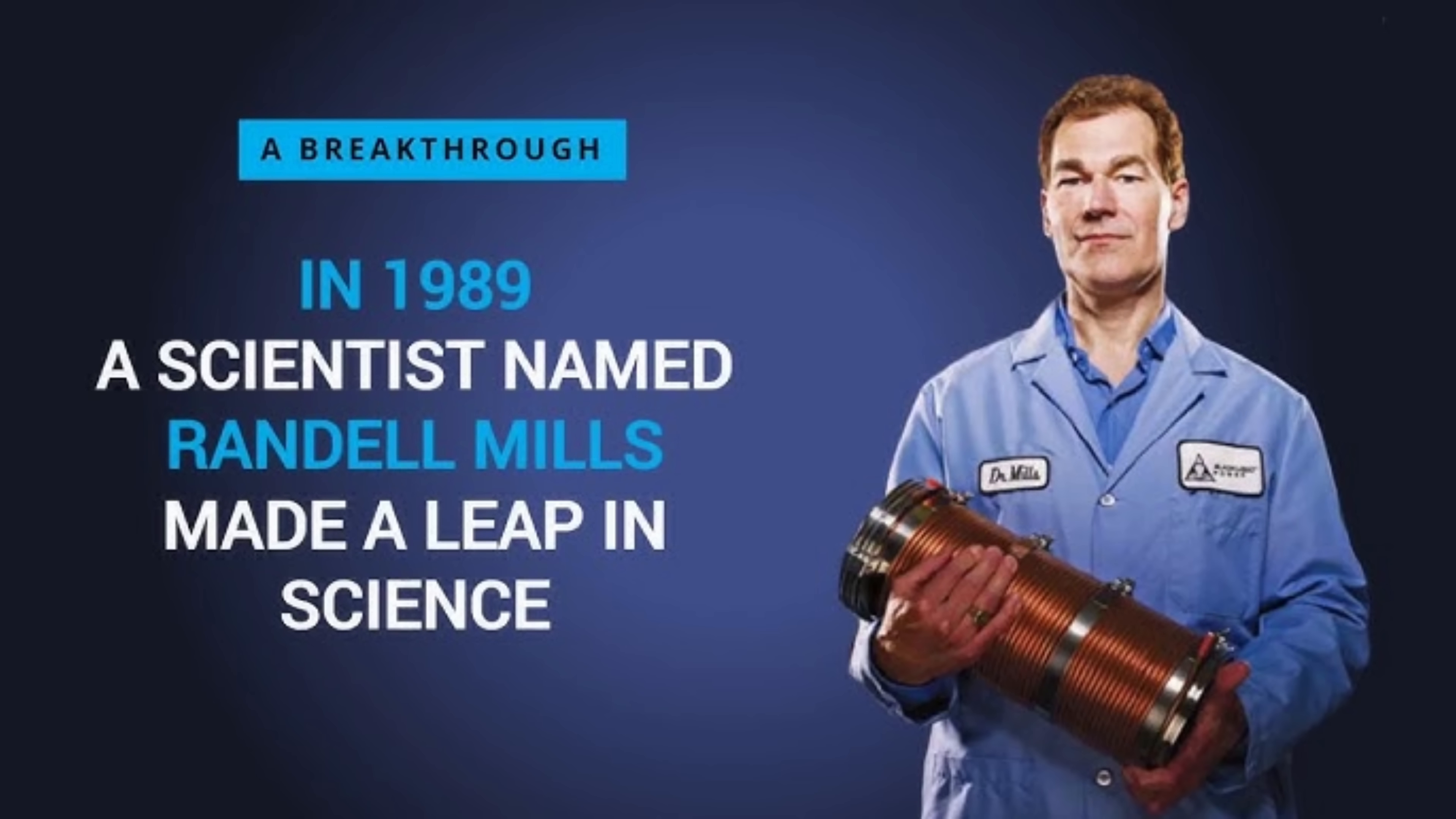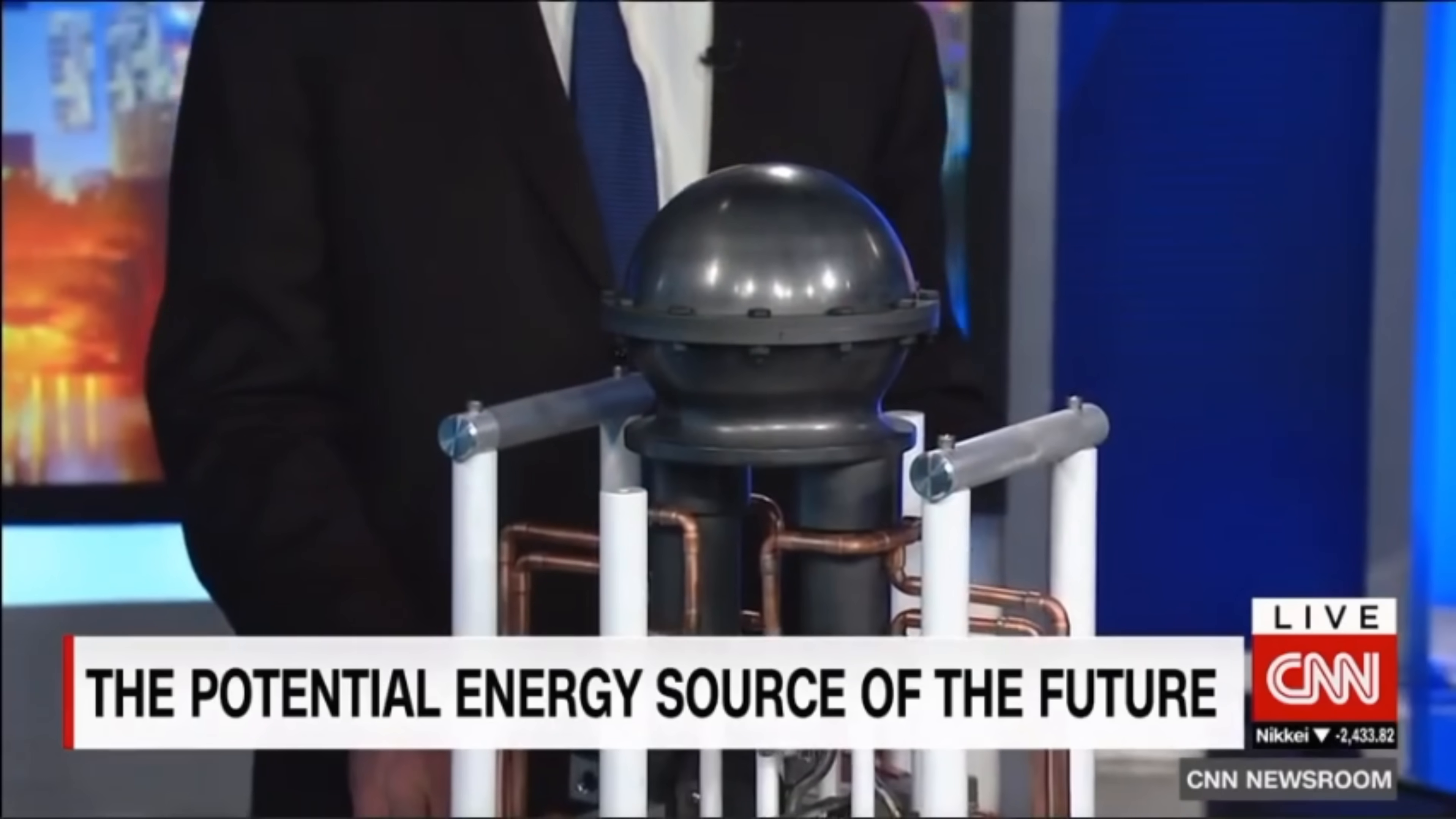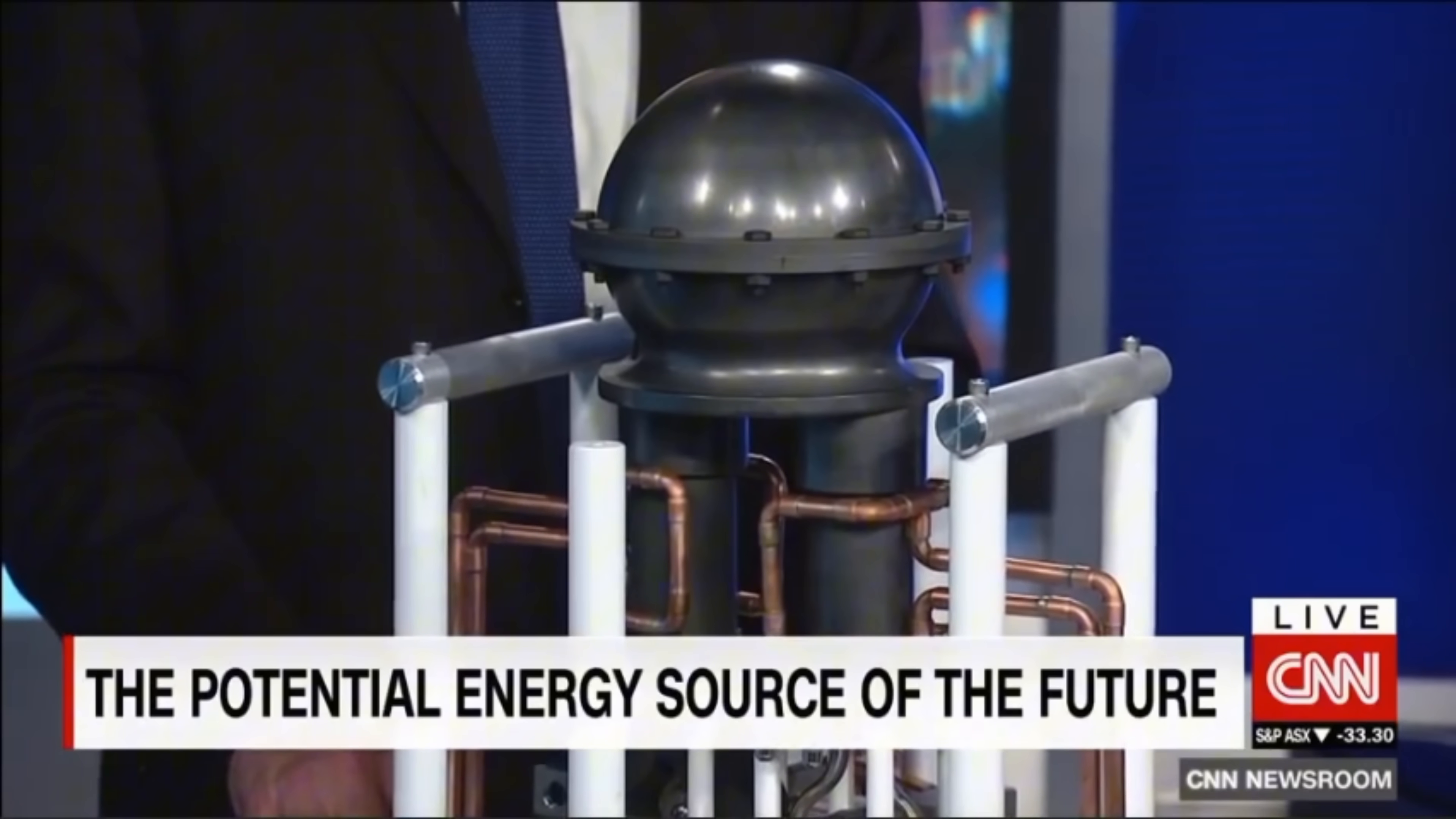That hydrogen, the most abundant element in the universe, can be coaxed into a lower energy state, releasing tremendous amounts of energy in the process. This process, which Mills calls hydrino formation, forms the basis of his Brilliant Light Power technology.